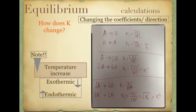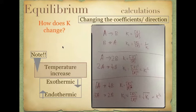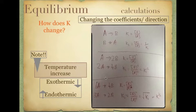Let's move on and look at how K changes — what can happen when we adjust our equation. Let's have a look at what can change K and how the equilibrium constant changes when we adjust our coefficients or the direction of our equation.